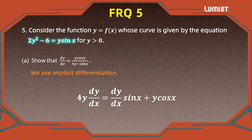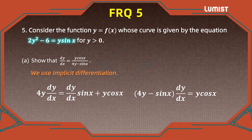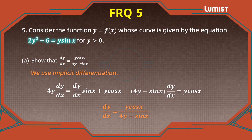On the right side, we have a product, so we use the product rule: derivative of y with respect to x times sine x, plus y times the derivative of sine, which is cosine of x. From this equation, we can factor out dy/dx: four y times dy/dx minus sine of x times dy/dx equals y cosine of x. Our conclusion is that dy/dx is equal to y cosine of x divided by four y minus sine of x. This is part A.